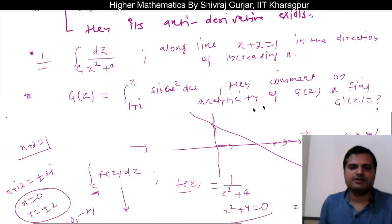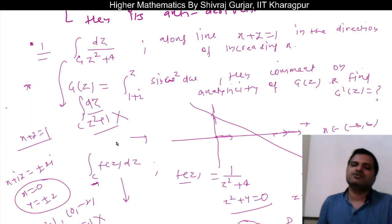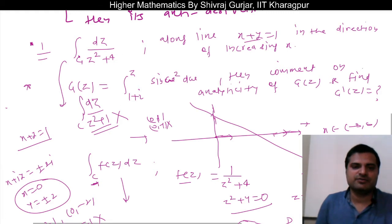Here, if we change the curve, if we ask the same question dz divided by z square plus 1 along the given curve, then its antiderivative doesn't exist because it loses analyticity at plus minus iota. Plus minus iota means (0,1) and (0,-1). These points lie on the curve x plus y equals 1, so then we won't be able to find its antiderivative because the precondition is that the integrand is analytic.